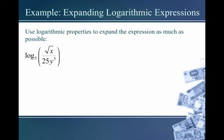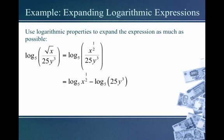Another example: log base b of the square root of x divided by 25y cubed. First, rewrite the square root of x as x to the one-half. Now we have a fraction inside the log, so apply the quotient rule, giving log base b of x to the one-half minus log base b of 25y cubed. Next, we have a product in that second log — 25 times y cubed — so let's separate it.